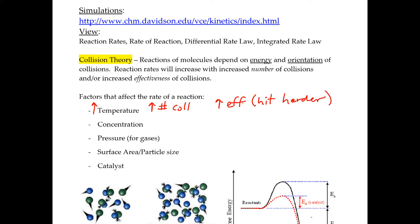If you want to make a reaction faster you would increase the concentration, because when you increase the concentration you will increase the number of collisions. You will not increase the effectiveness because they're still hitting at the same speed on average, but you'll have more collisions.